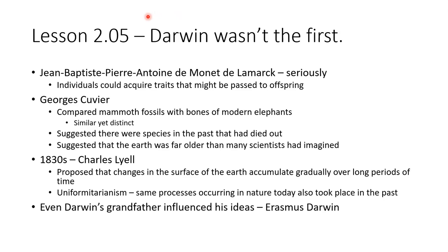We are going to talk about how Darwin wasn't actually the first. Jean-Baptiste Pierre-Antoine de Monet de Lamarck — that's seriously his name — observed early on that individuals could acquire traits that might be passed to offspring. Georges Cuvier compared mammoth fossils with bones of modern animals and realized they were similar yet distinct, suggesting there were species in the past that had died out, which suggested the Earth was far older than many scientists had imagined.